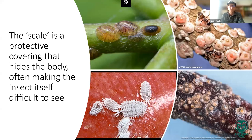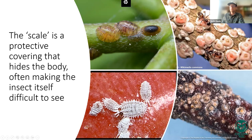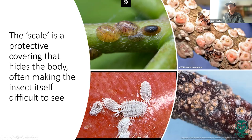The term 'scale' refers to the protective covering that obscures the body of the insect, making it difficult to see, difficult to predate, and difficult to control. There's a variety of appearances: the tortoise shell scale looks like a tortoise shell; San Jose scales have various scale coverings. Some are leathery extensions of the exoskeleton, while others — like those in armored scales — are waxy secretions that protect the scale body.